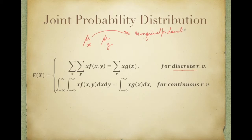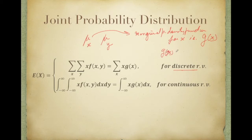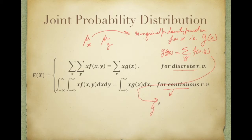The marginal probability density function for X, that is g(x). You already know the procedure for calculating g(x). g(x) is nothing but the summation of f(x, y) over the range of y. For the continuous probability distribution, g(x) is nothing but the integration from minus infinity to infinity of f(x, y) dy.